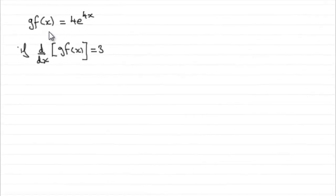For this last part of the question, we already know that gf of x is equal to 4e to the 4x, and we're told that if you were to differentiate gf of x with respect to x and it comes to 3, what we've got to do is find x to 3 significant figures.